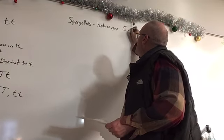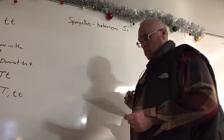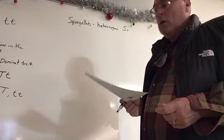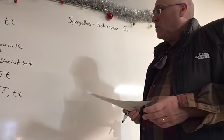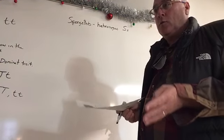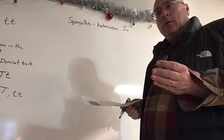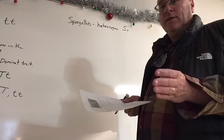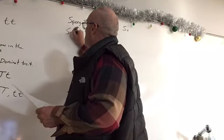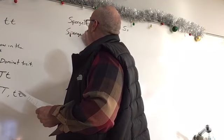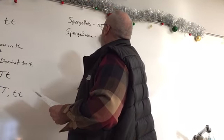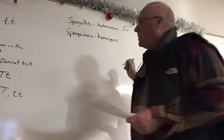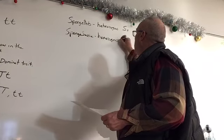For SpongeBob to be heterozygous for his square shape, he would be capital S lowercase s. Then it says Sponge Suzy is round. Since square shape is dominant to round, the only way to get the round shape is to have both recessive alleles. So Sponge Suzy is homozygous for her recessive trait, which means she is lowercase s lowercase s.